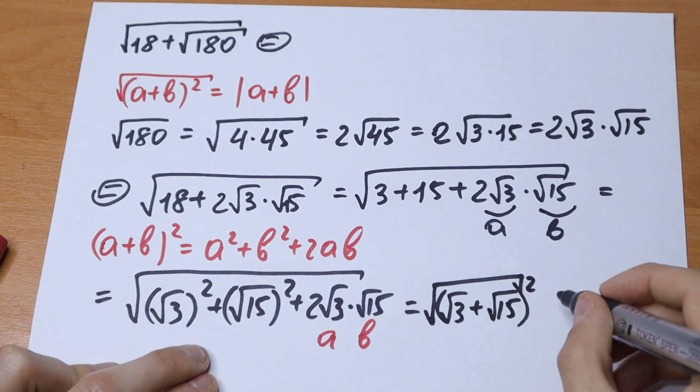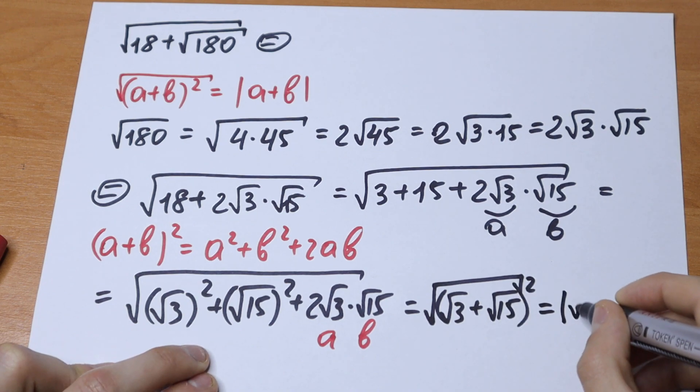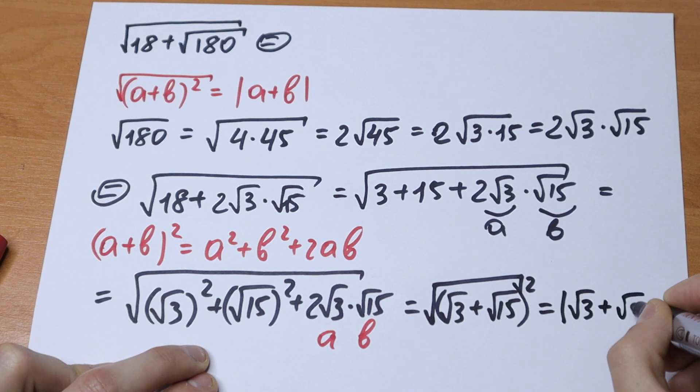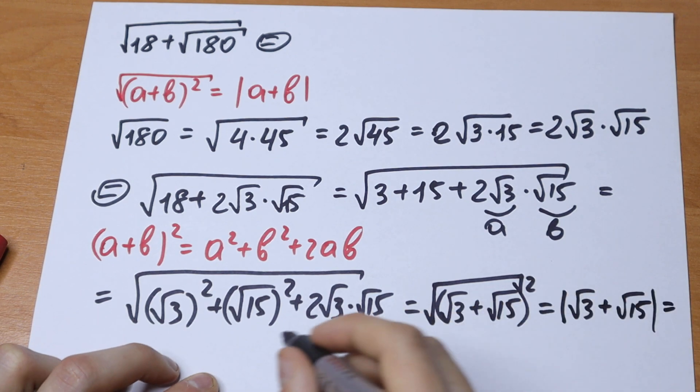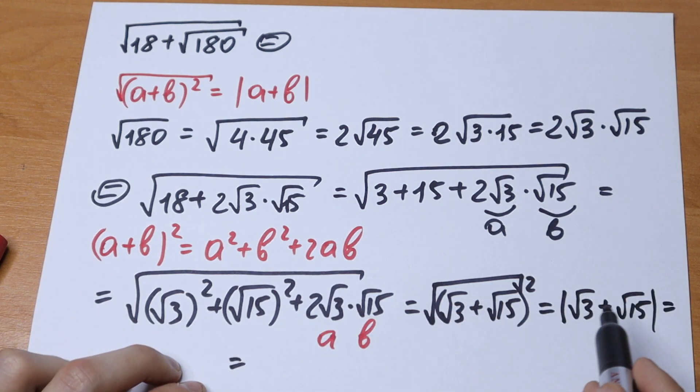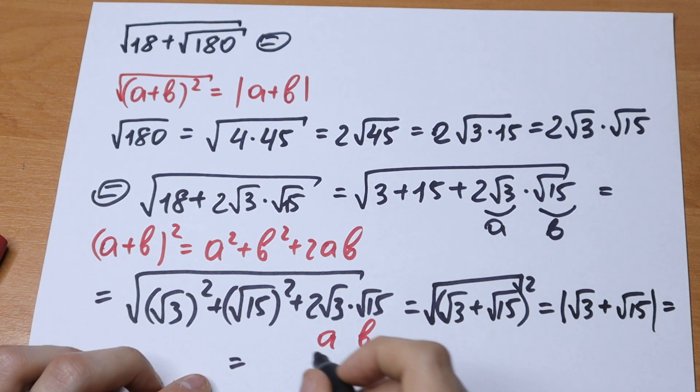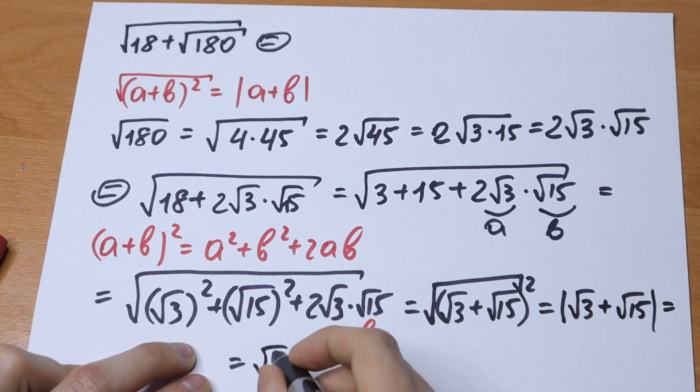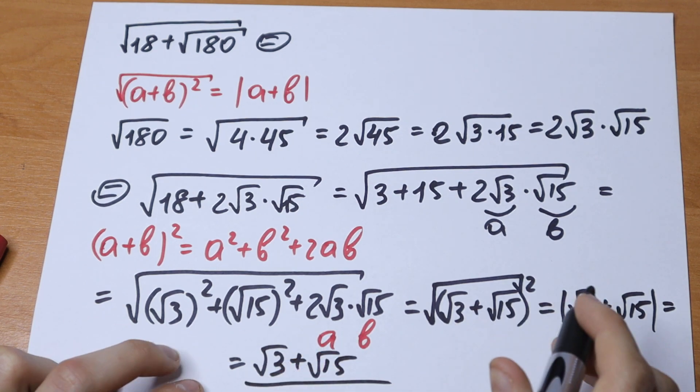We can cancel this using absolute value: square root of 3 plus square root of 15. This absolute value will be positive because we have two positive values. So we can write this as square root of 3 plus square root of 15, and this is our final answer.